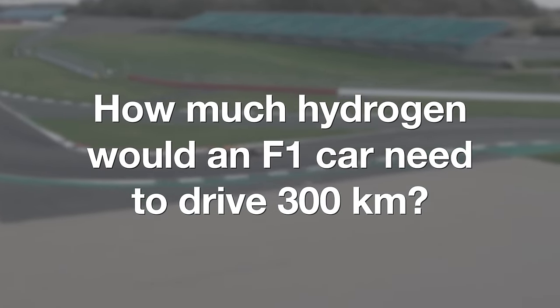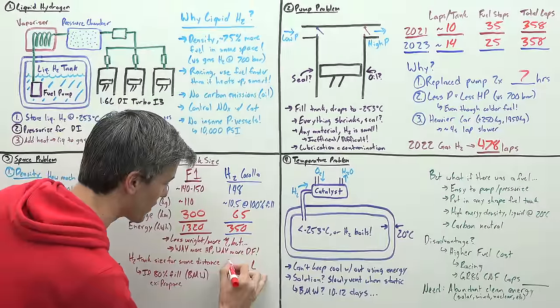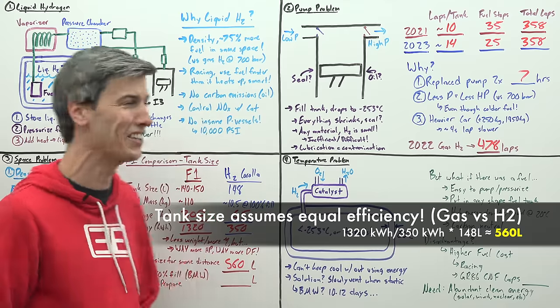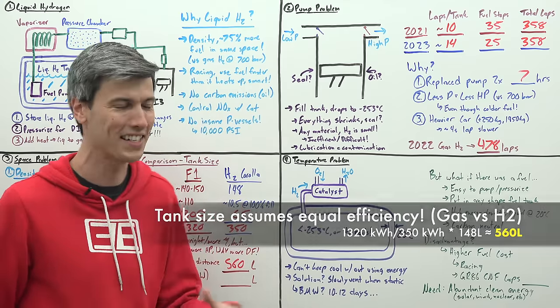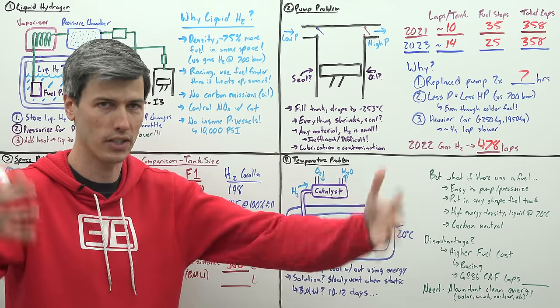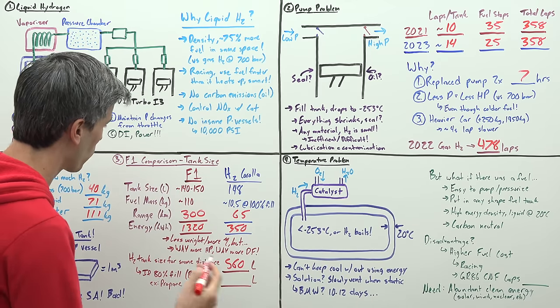When you start to look at these and think, how do I get an F1 car to travel 300 kilometers using liquid hydrogen? You would need a tank size of 560 liters, about 150 gallons. That is an absurd tank size. Keep in mind this is going to be this spherical pod that you just have to sit somewhere in the car, very awkward to make this happen.